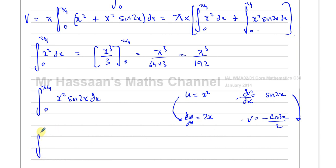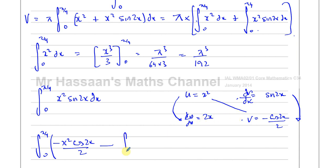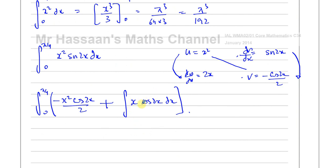Applying integration by parts: we get x squared times (minus cosine 2x over 2) minus the integral of (minus cosine 2x over 2) times 2x dx. The twos cancel and minus times minus gives a plus, leaving minus x squared cosine 2x over 2 plus the integral of x cosine 2x dx. We still have this integral to deal with, so we apply integration by parts a second time.